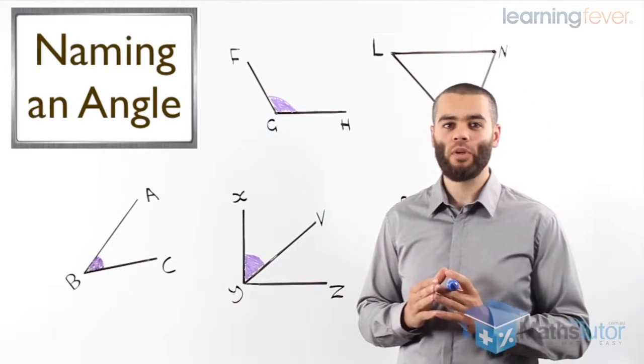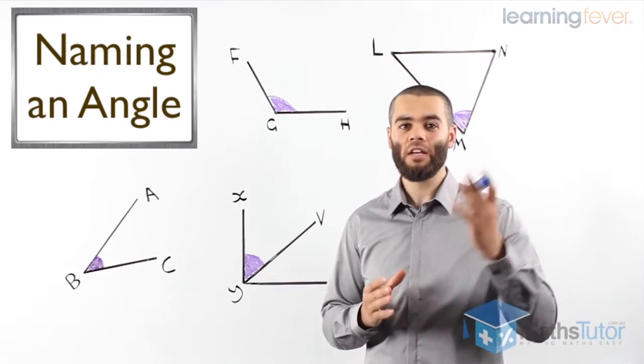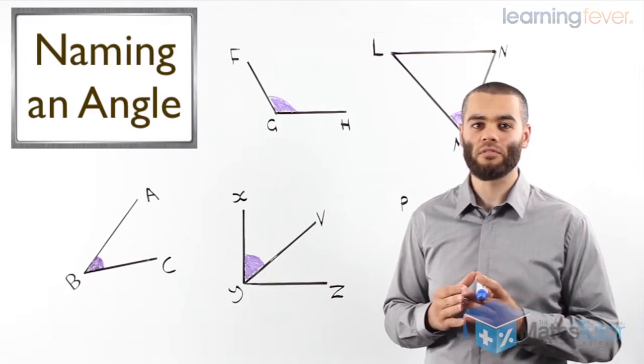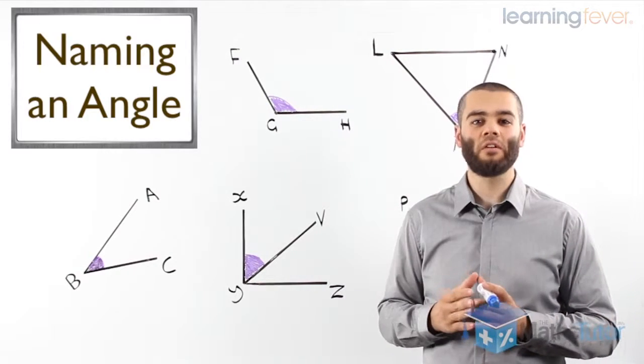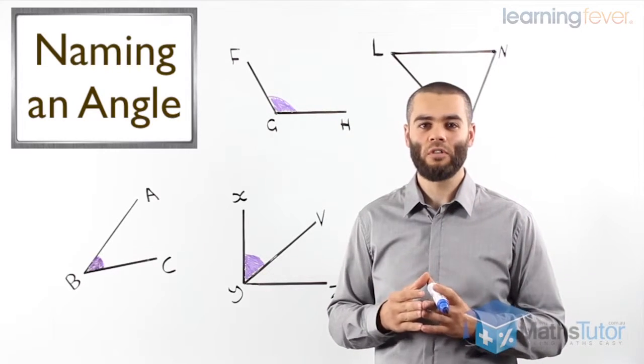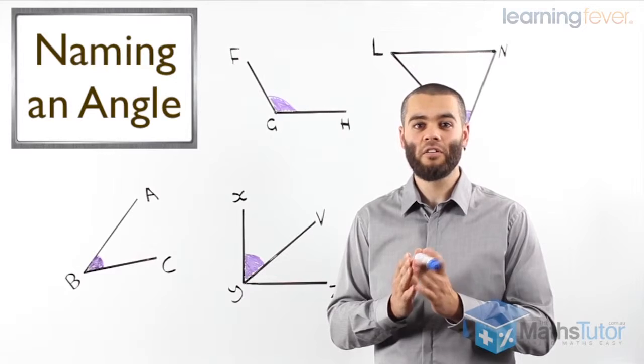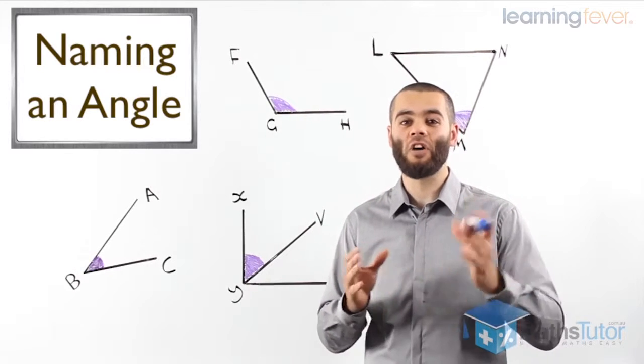we need to differentiate between naming an angle and a type of angle. The majority of times when I ask students, how do you name an angle, or can you please name this angle for me, what do they say? They say, oh, this is an acute angle or obtuse angle or reflex angle. That is not naming an angle. That is basically a type of an angle.